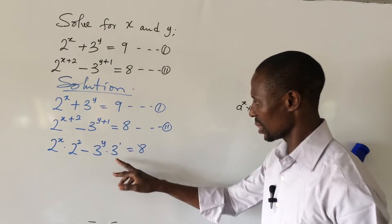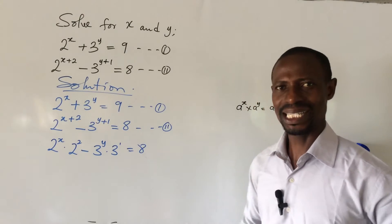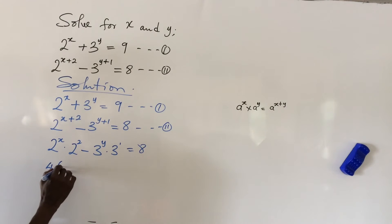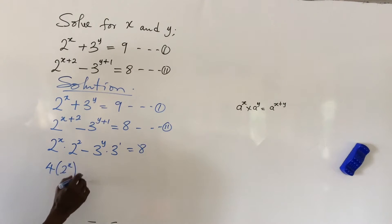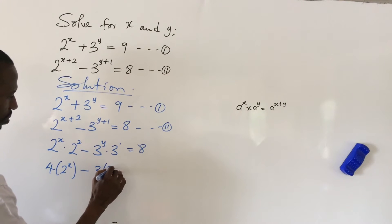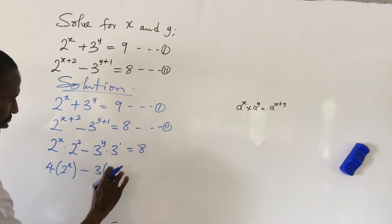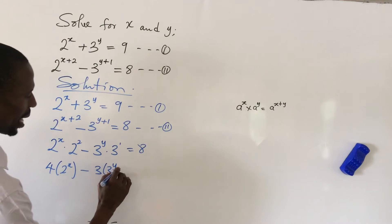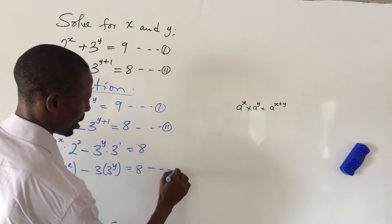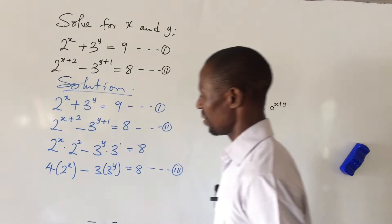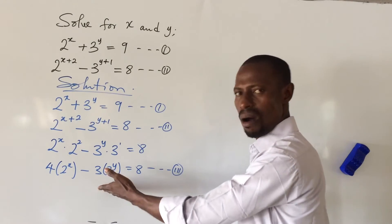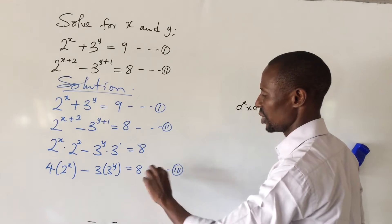Now that we've done this, we know that 2 to the power of 2 is 4 and 3 to the power of 1 is 3. So we can rewrite this as: 4 times (2 to the power of x) minus 3 times (3 to the power of y) equals 8. We call this equation three. We have now transformed equation two into this new format.